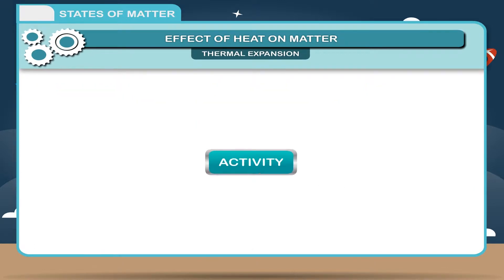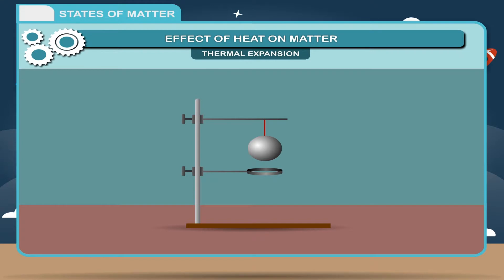Activity. An iron ring-ball apparatus consists of a metallic ring and metallic ball. The outer diameter of the ball is equal to the internal diameter of the ring. Initially, the ball easily passes through the ring. Now, heat the ball strongly for a few minutes. You will observe that the ball does not pass through the ring because its diameter has increased.